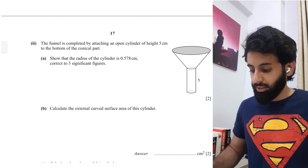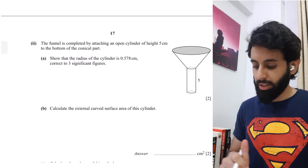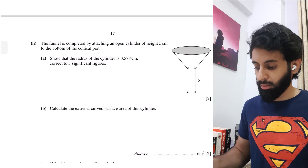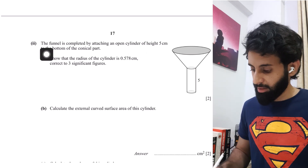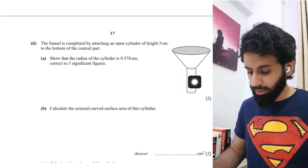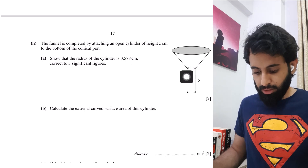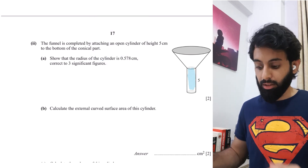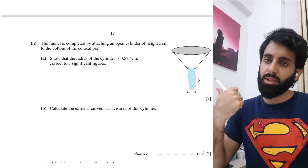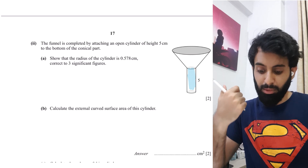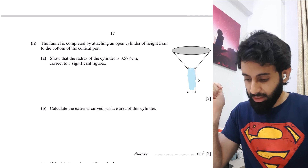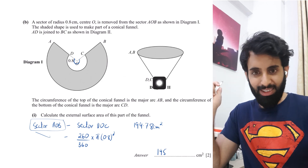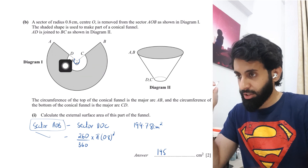The funnel is completed by attaching an open cylinder of height 5 cm to the bottom of the conical part. The question asks us to show that the radius of the cylinder is 0.578 cm. The key insight is that the question told us the bottom of the conical funnel is the major arc CD — that arc length becomes the circumference of the circular base of the cylinder.